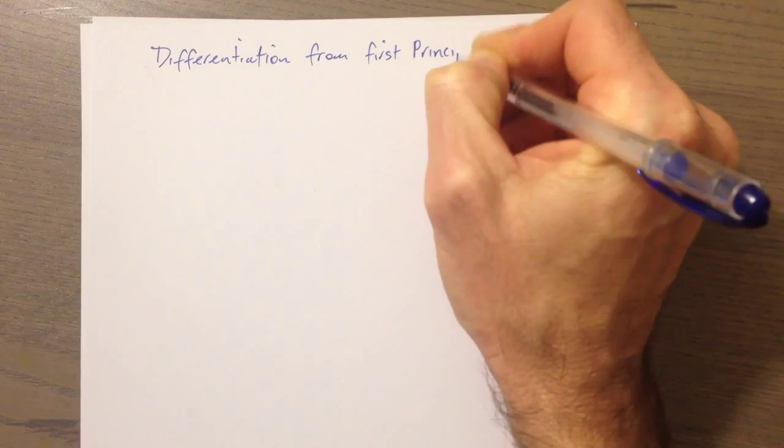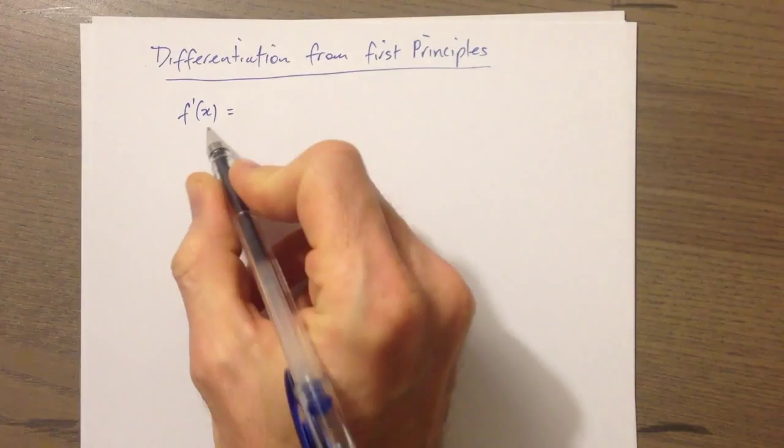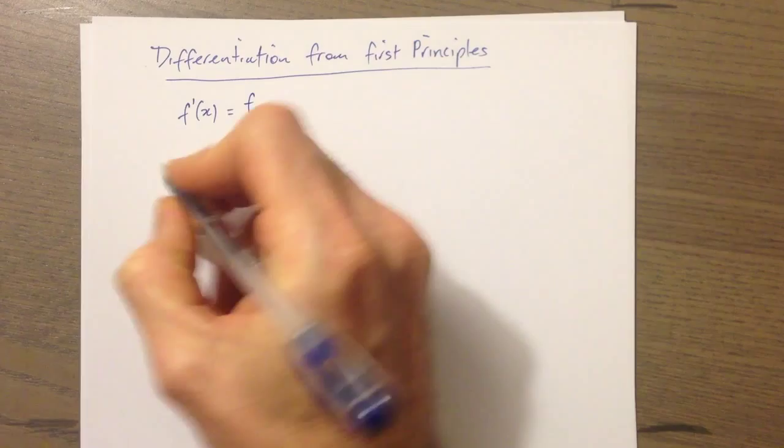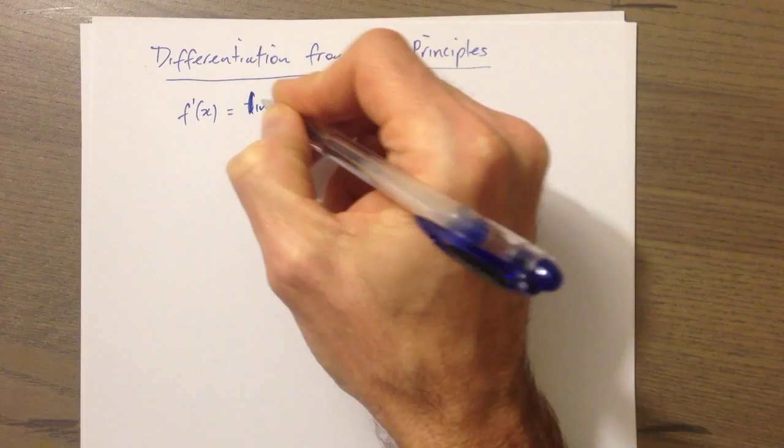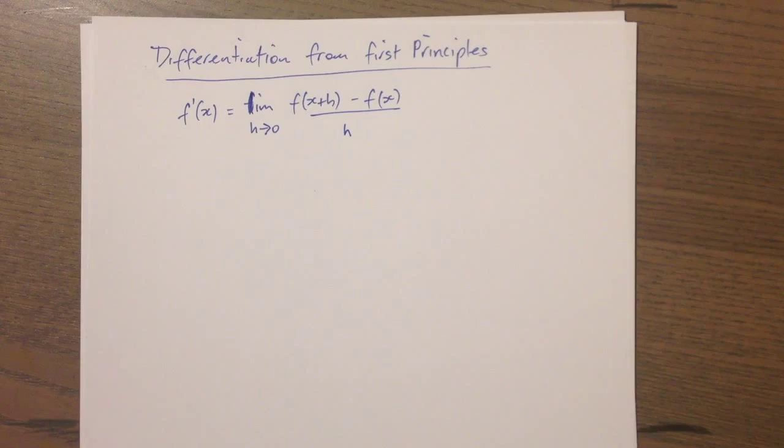So I'll start with the main formula that we use for this and talk a little bit about the notation as well. So f dash of x — this is the notation for the derivative. And we say the derivative is equal to the limit as h approaches 0 of f of x plus h minus f of x, all divided by h.